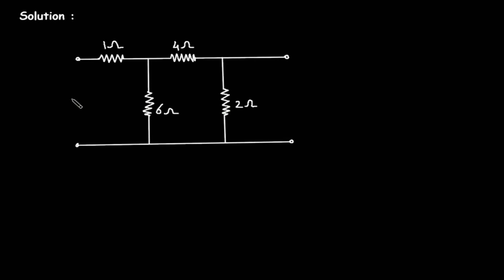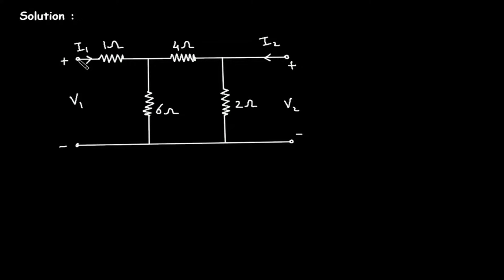Here we can see: this is port 1 with voltage V1, positive terminal on top and negative below, with current I1 entering. This will be current I2, and this will be voltage V2, positive on top and negative below. Now as we can see, it has four terminals — 1, 2, 3, and 4. These two terminals form port 1, and these two terminals form port 2.